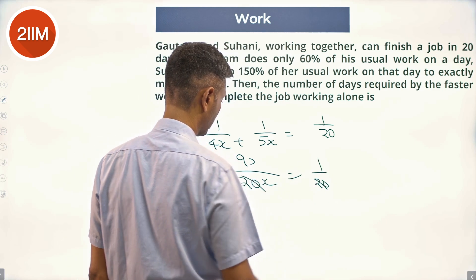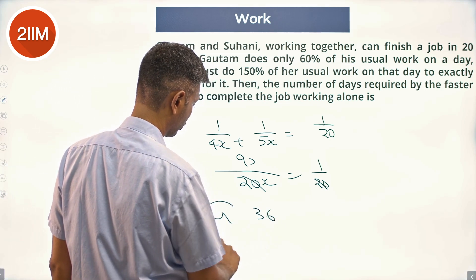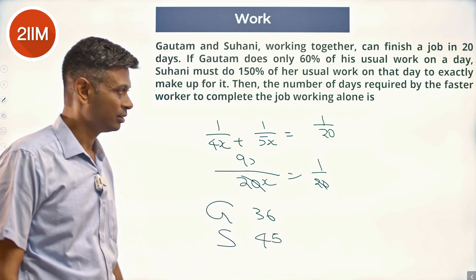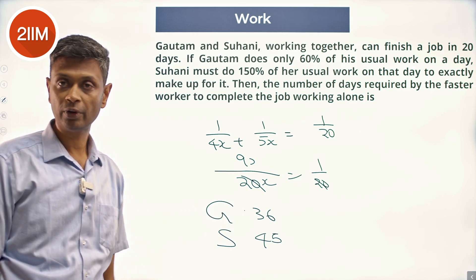20. x is 9, so Gautam takes 36 days, Suhani takes 45 days. The number of days required by the faster worker to complete the job is 36 days.